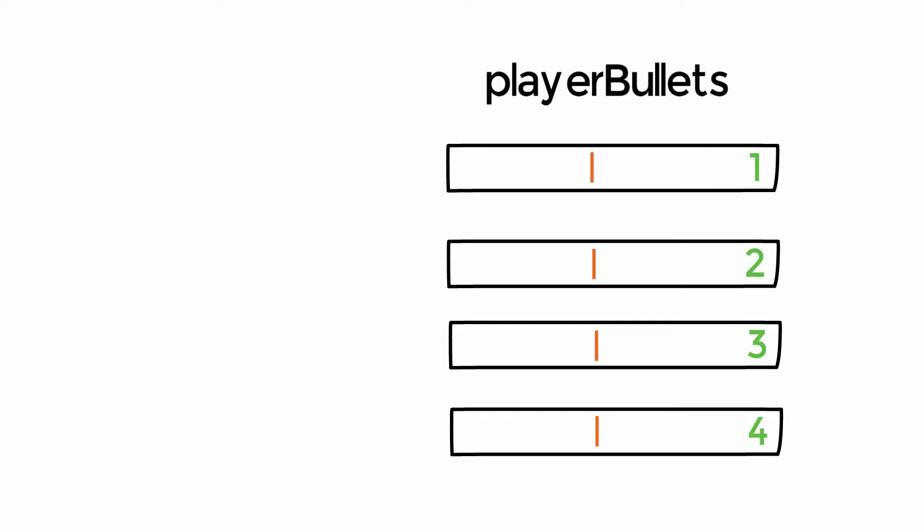You might think we've ended up back where we started with simply four separate bullet objects, and in effect that's what we do have. But by putting them inside an array we gain very useful advantages. The key advantage is the way we access these variables. With the copy-paste approach, we had to give variables different names and type them manually into our code. In an array, we use these slot numbers — called indexes — to access the various elements.